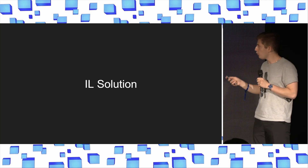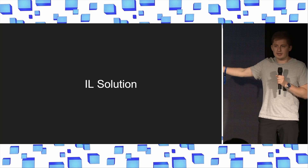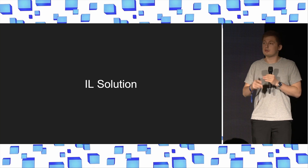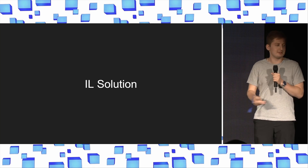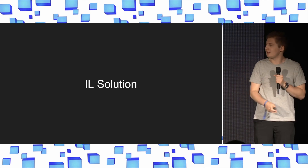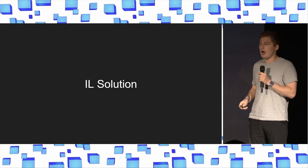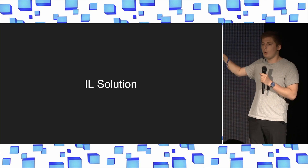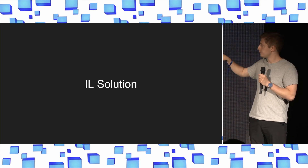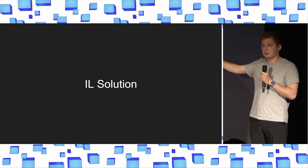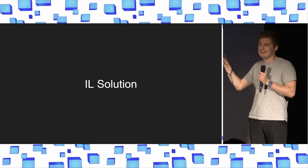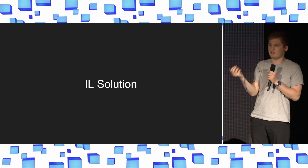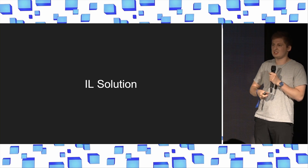There's a whole literature on inclusion lists which basically try to mitigate this. There are a lot of open questions, and inclusion lists end up becoming a core new primitive needed to solve this new centralization vector.